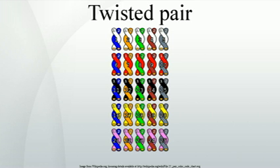In balanced pair operation, the two wires carry equal and opposite signals and the destination detects the difference between the two. This is known as differential mode transmission. Noise sources introduce signals into the wires by coupling of electric or magnetic fields and tend to couple to both wires equally. The noise thus produces a common mode signal which is cancelled at the receiver when the difference signal is taken.